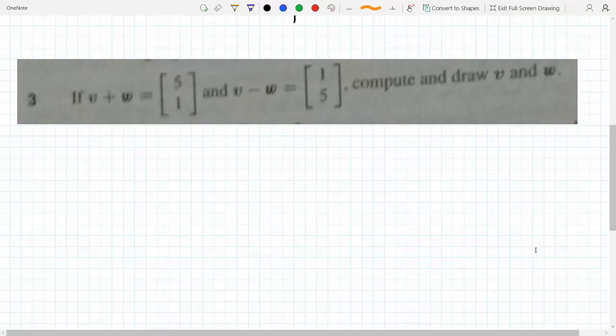Okay, here we have the sum of two vectors, the difference of two vectors, and we need to figure out what these two vectors are. Well, think about it: if you have the sum and you have the difference, if you add the two vectors, one of them cancels out.